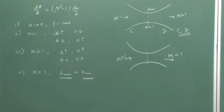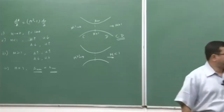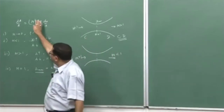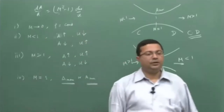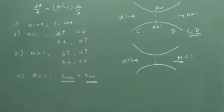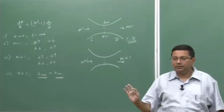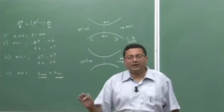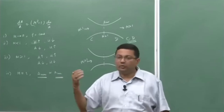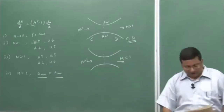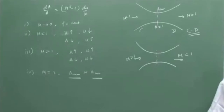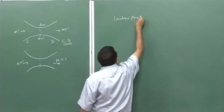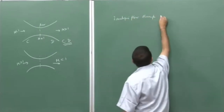Now let us proceed from there. I would like to get the actual relationship so that we can get the velocity. In the derivation of all this, where we got the Mach number, we have assumed that the flow is adiabatic and frictionless — therefore isentropic. So now let us take it further and look at the isentropic flow through the variable area ducts. The next topic is isentropic flow through variable area ducts.